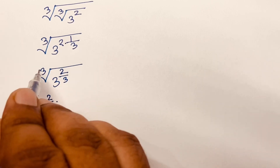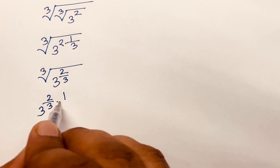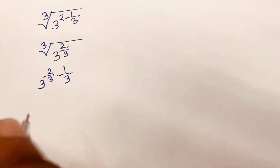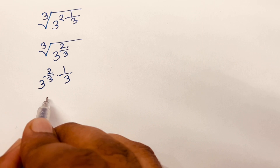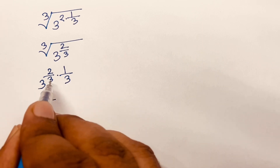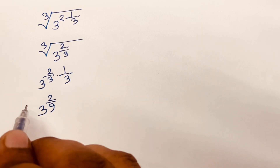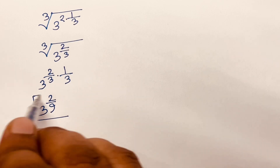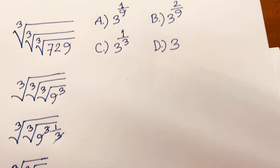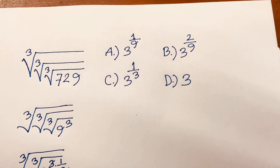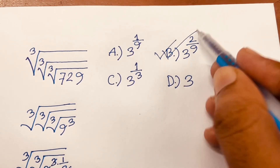Then applying the outer 3 square root, which is 1 over 3: 3 power 2 over 3 times 1 over 3 equals 3 power 2 over 9. So our final answer is 3 power 2 over 9. Checking the options, option B is the right answer.